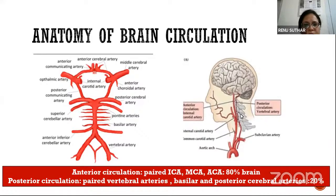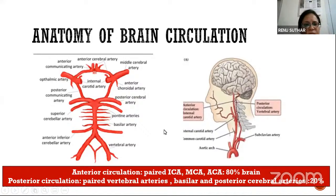Cerebral circulation is divided into anterior and posterior circulation. The circle of Willis is the main arterial blood supply of the brain. It is formed by two internal carotid arteries. In the posterior circulation, we have the basilar artery, formed by joining two vertebral arteries. Almost 80% of the brain is supplied by anterior circulation and 20% by posterior circulation. Anatomy is important to localize clinical signs and symptoms and to identify which artery is probably involved in causing stroke.